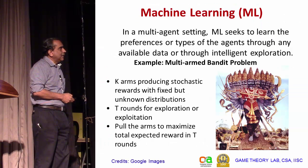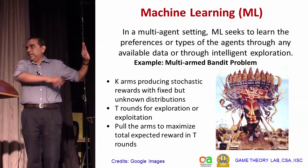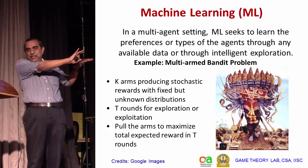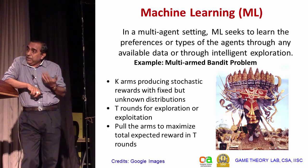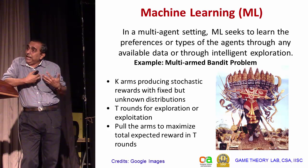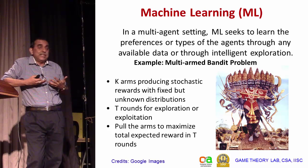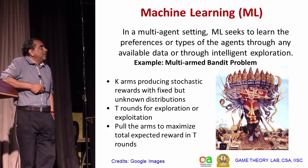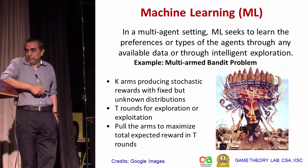What does machine learning do? In a multi-agent setting, machine learning seeks to learn the preferences or types of the agents through any available data or through intelligent exploration.